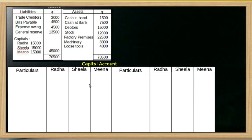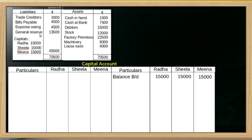Capital account: the opening balance of each partner's capital account. Sheela's opening balance and Meena's opening balance are taken from the balance sheet. General reserve is also divided among the partners.